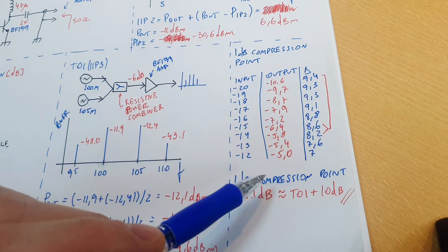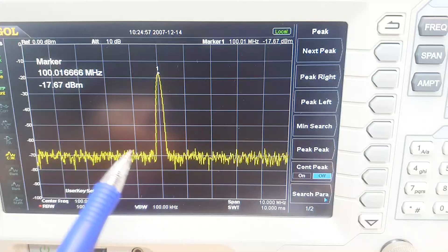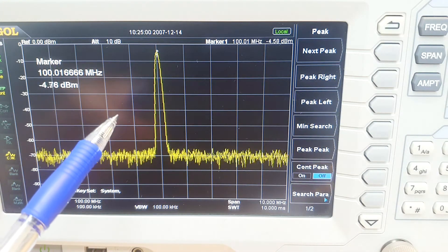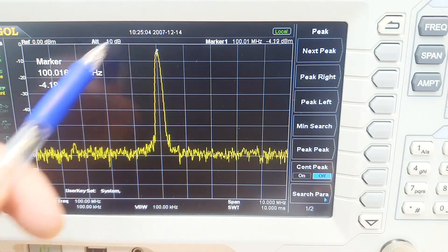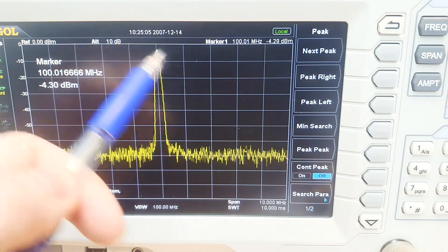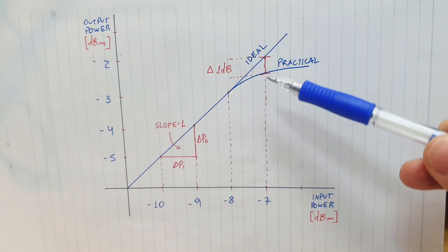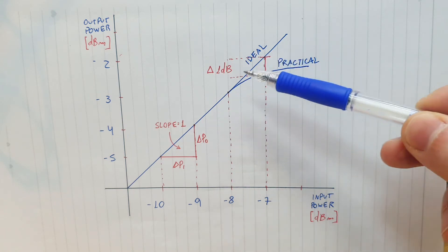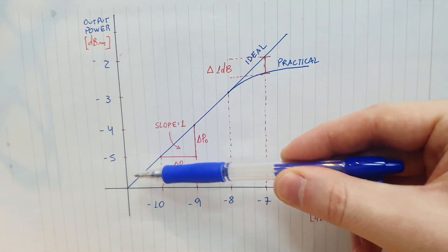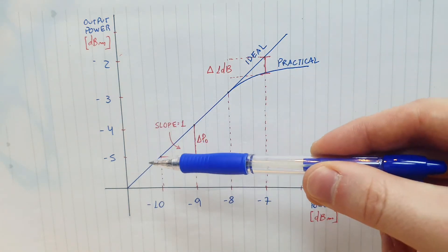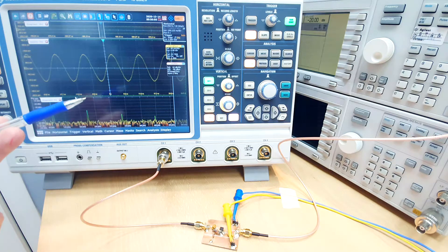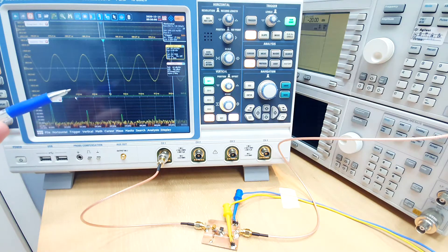In the next video we're going to learn what the third-order intercept point is. It's very clear that if we try to put more power at the input, the output will not grow anymore. In a real application it's really important to use the amplifier well below the 1dB compression point so we maintain linear, small signal operation.